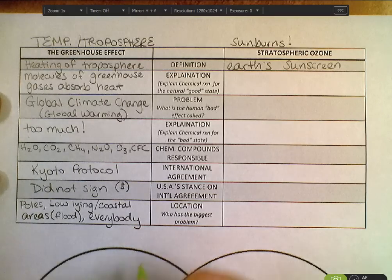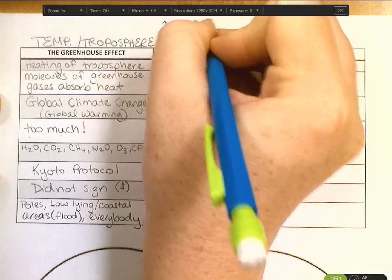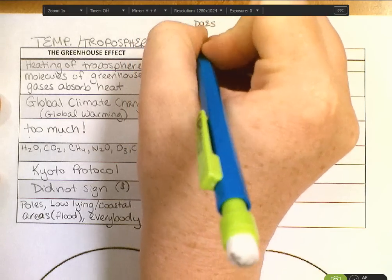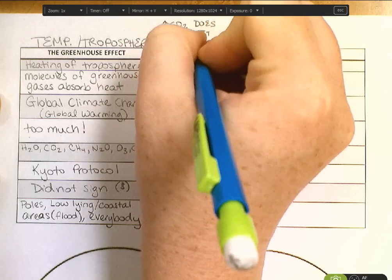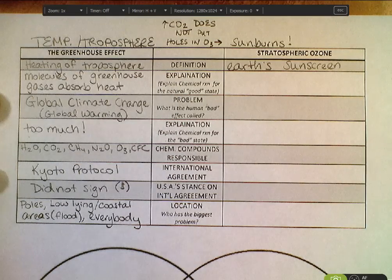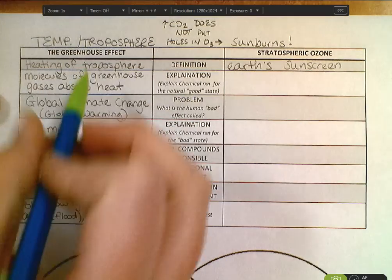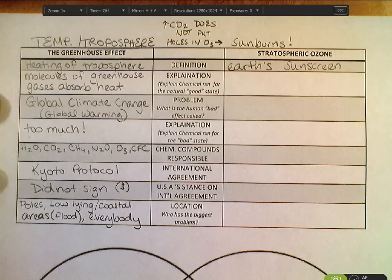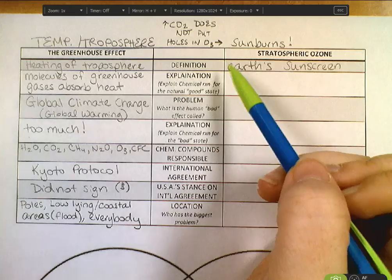What I want you to get more than anything is that increased CO2 does not put holes in the ozone layer. That is the most common mistake we see on FRQs all the time — people say more greenhouse gases makes a hole in the ozone layer. No, it doesn't. The increase in greenhouse gases stays in the troposphere. But there is one exception, and we'll get to that in a minute.